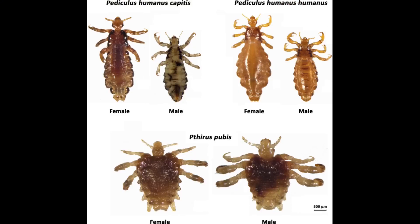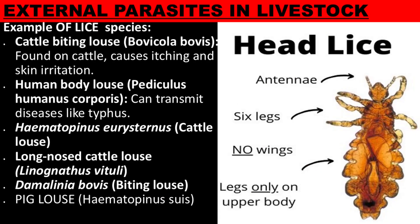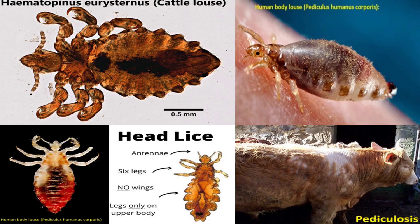Lice are small, wingless insects that live as external parasites on the skin or hair of mammals and birds. They are divided into two main types based on their feeding habits: biting or chewing lice, which feed on skin particles, feathers, or fur; and sucking lice, which use specialized mouthparts to pierce the skin and suck blood.